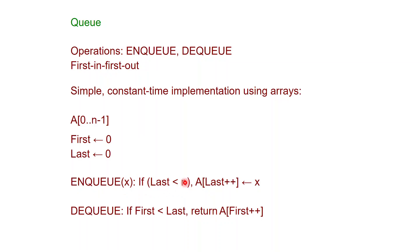If last is not less than N, we do nothing because it means we are trying to put too many elements in the queue. If it is, we simply put X at position last in A and then increment last. In dequeue, we first check if there is something to get out of the queue — if first is less than last. If not, we do nothing because the queue is empty. Otherwise, we return the element at position first of A and then increment the pointer first.